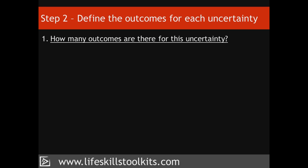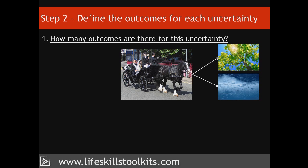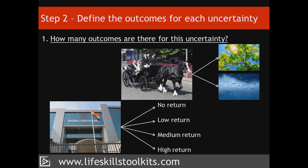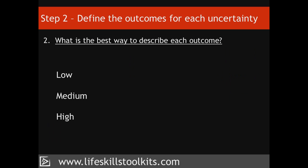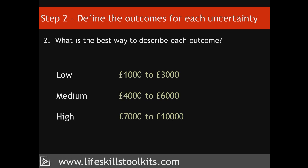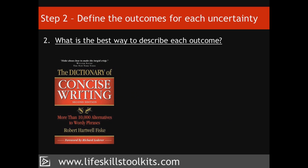When answering how many outcomes there are for an uncertainty, bear in mind that you could be facing just two outcomes – for example, rain or shine for a wedding day – or you could face more than two, for instance different levels of return on an investment. A range may also work, so that low, medium and high returns might be described by ranges such as £1,000 to £3,000, £4,000 to £6,000 and £7,000 to £10,000. When describing a range and wanting to keep things simple, you could use a stand-in value such as £2,000 for the £1,000 to £3,000 range, £5,000 for the £4,000 to £6,000 range, and so on. Whether you use numbers or ratings, make sure that what you use describes the outcome in as concise a way as possible.